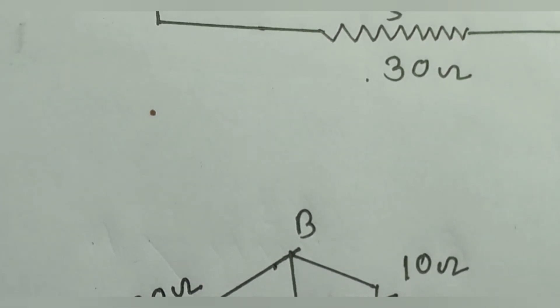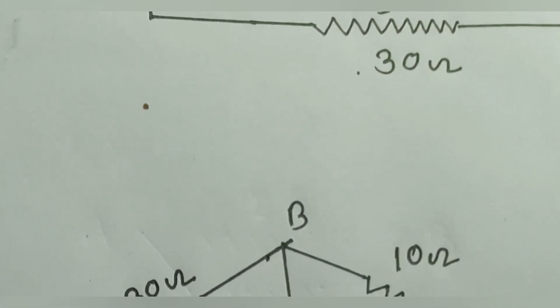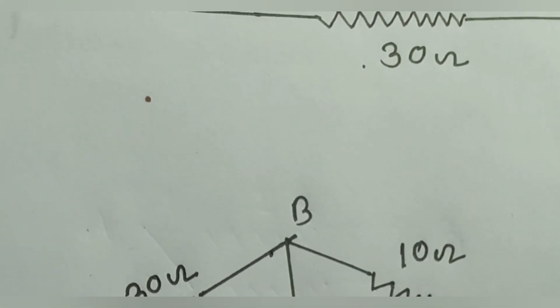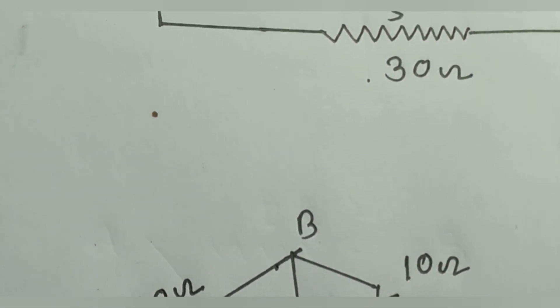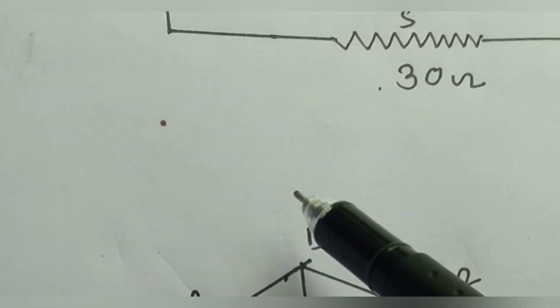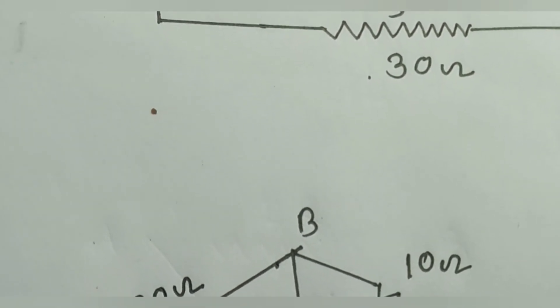And in this condition B and D are in same potential. Therefore no current flows through B to D. Then we can omit this resistance of 10 Ohm.